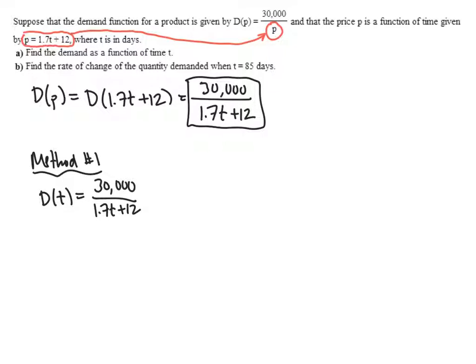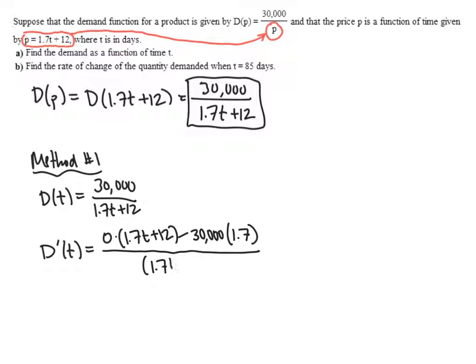And just take the derivative. In this case we can use the quotient rule. So D prime of t is going to be the derivative of the top, the derivative of 30,000 is 0, multiplied by the bottom, so 1.7t plus 12, minus the top 30,000 times the derivative of the bottom. And the derivative of 1.7t plus 12 is just 1.7. And then all divided by the bottom squared, 1.7t plus 12 squared.